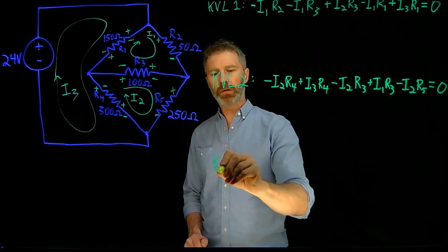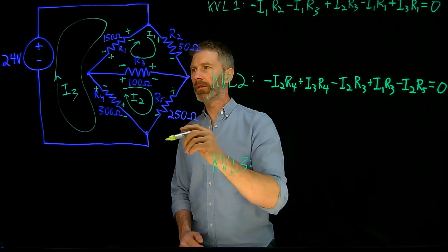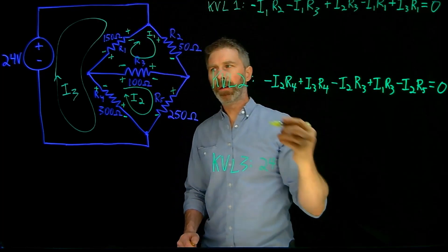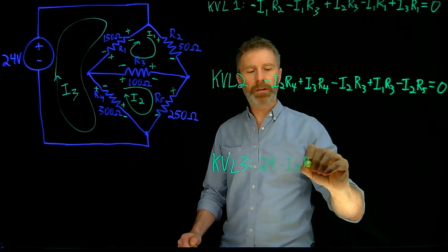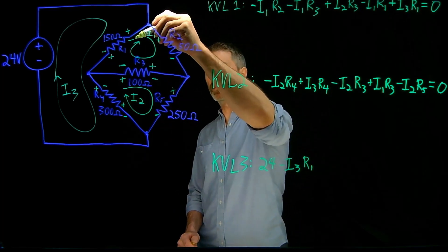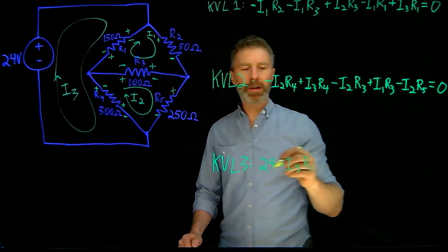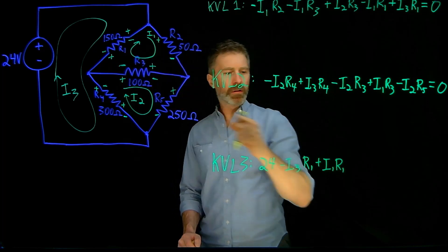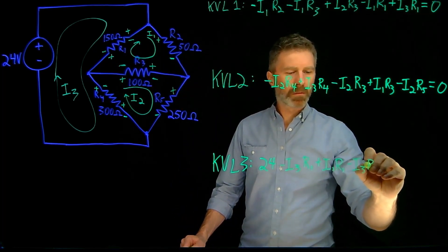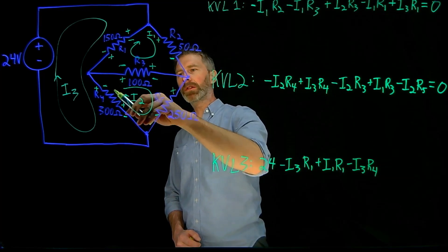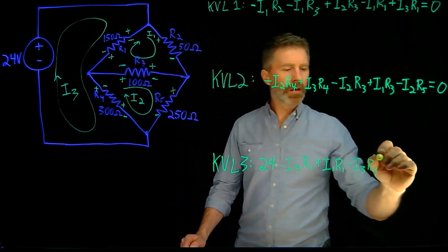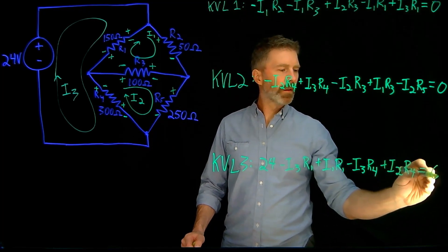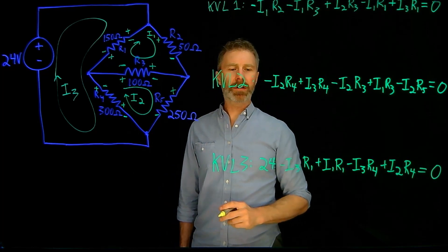For KVL loop number three, starting at this point and going around: we have plus 24 volts, then minus I3·R1. We also have I1 going through R1, and because we're going from negative to positive when going around the loop clockwise, we get plus I1·R1. Then minus I3·R4. We also have I2 going in this direction but we're traversing the loop in the opposite direction, so we're going from negative to positive, giving us plus I2·R4. Back to the beginning of the loop, so that KVL equation sums to zero.